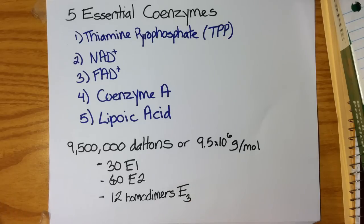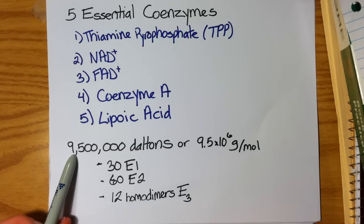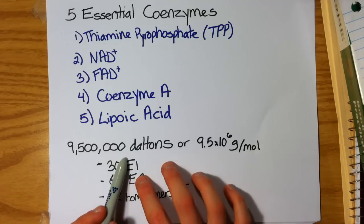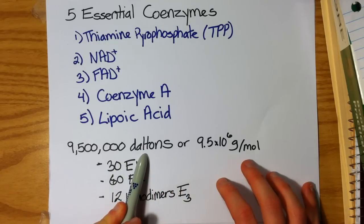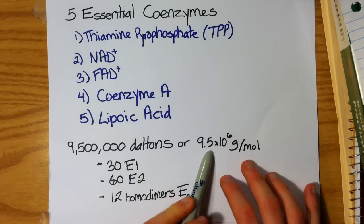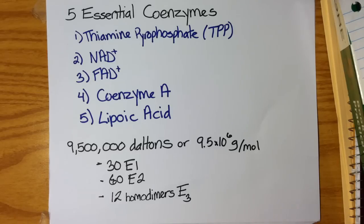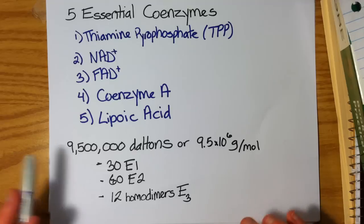Another distinguishing feature about this enzyme complex is just its sheer size. This complex is 9.5 million Daltons in size. Again, one Dalton is equivalent to 1 gram per mole, so it's essentially 9.5 times 10 to the 6 grams per mole. That's its molecular weight. It's massive.